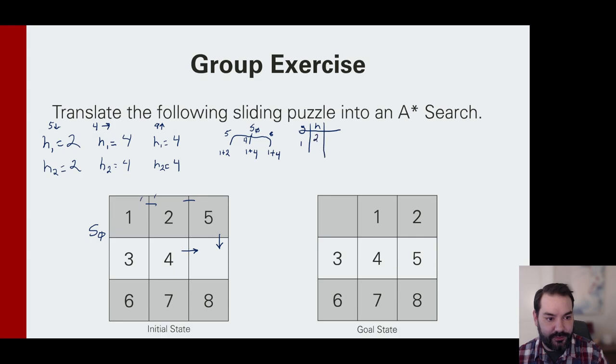We have our three potential moves. So we have g values of one, one, and one, and f values of three, five, and five. Since we're dealing with a priority queue in the A-star, we see which one would be our next consideration. We would just start to expand it out and continue to move through that.